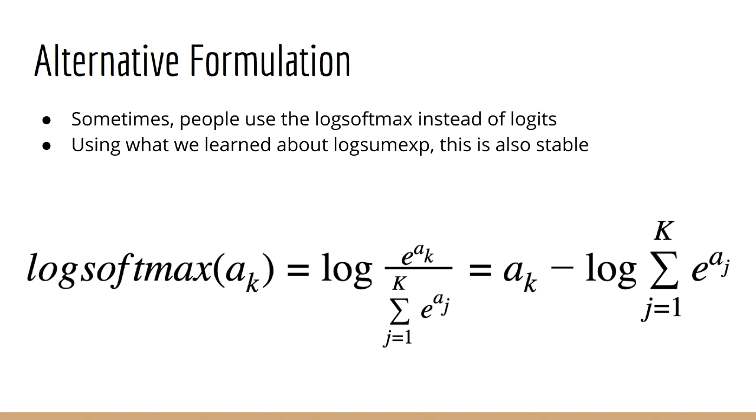After which we can define a cross entropy function in terms of the log softmax rather than the logits. So let's see how that works. The trick is we see that if we take the log of the softmax function, we immediately get the log sum exp. Now we know that this can be numerically stable if computed correctly, so it's okay to keep it in this form.